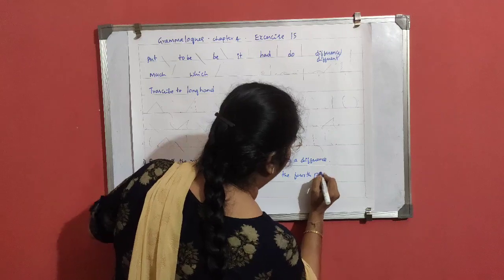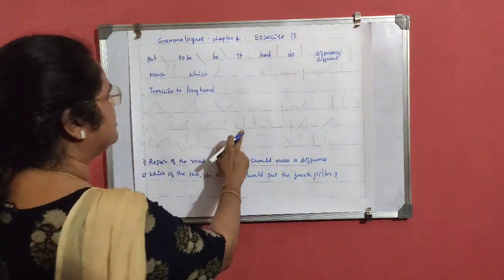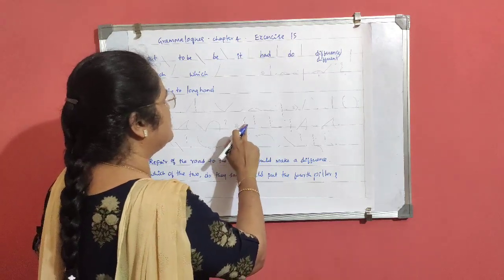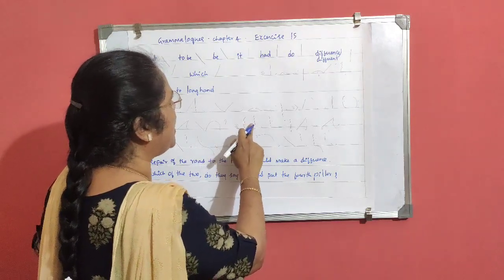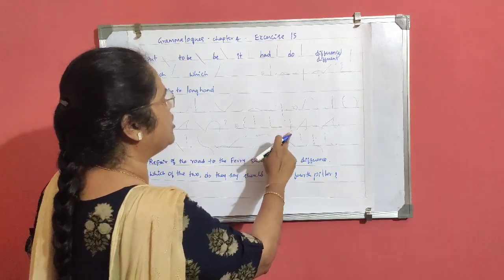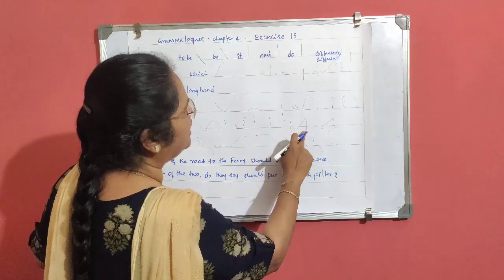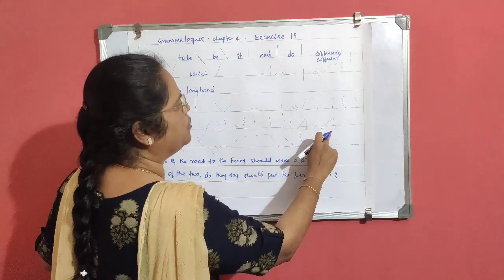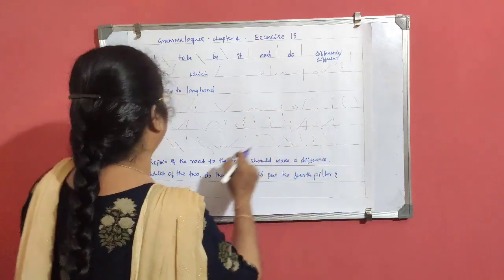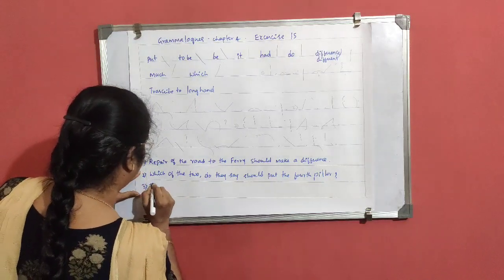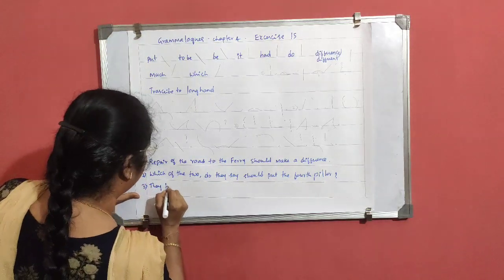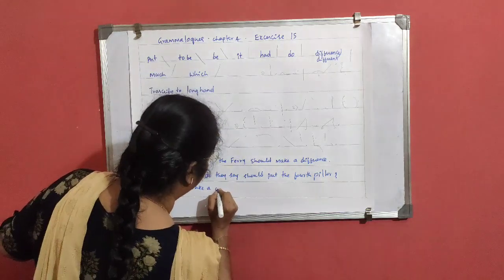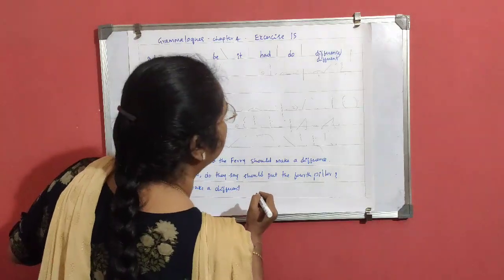After this there is a question mark. Then the third one: They had - grammar log - to - grammar log - it, a oval. Had to take - A is a grammar log - different - grammar log - root, R and T through the line. They had to take a different root.